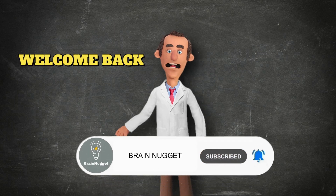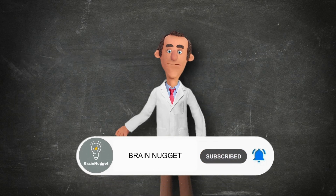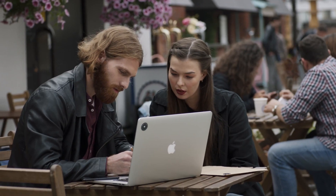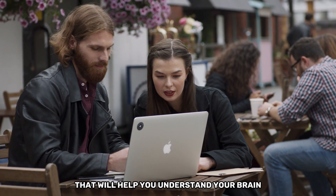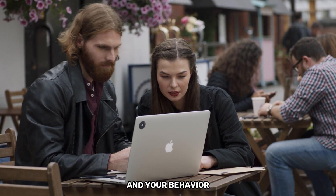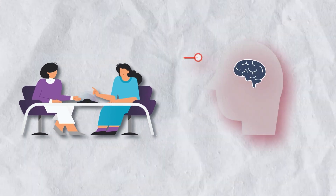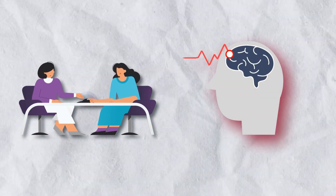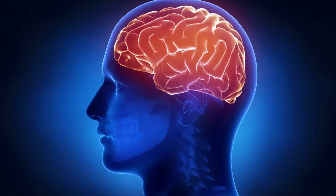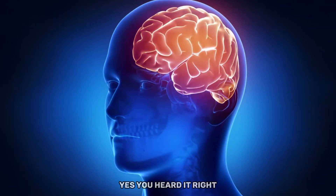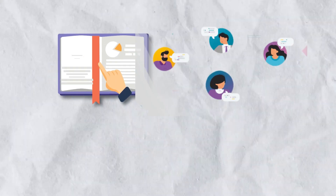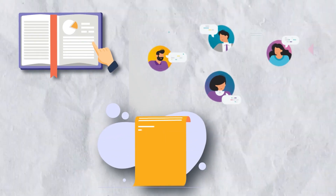Hello and welcome back to Brain Nugget, the channel where we provide you with bite-sized pieces of knowledge that will help you understand your brain and your behavior. Today, we're going to talk about 5 social psychology tricks for getting what you want. Yes, you heard it right, we're going to teach you how to be a little sneaky in a fun and playful way.